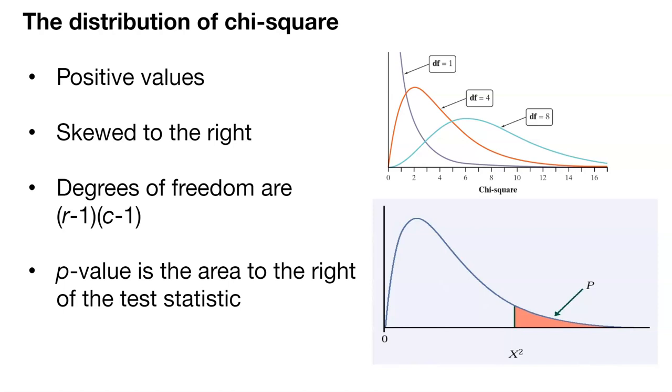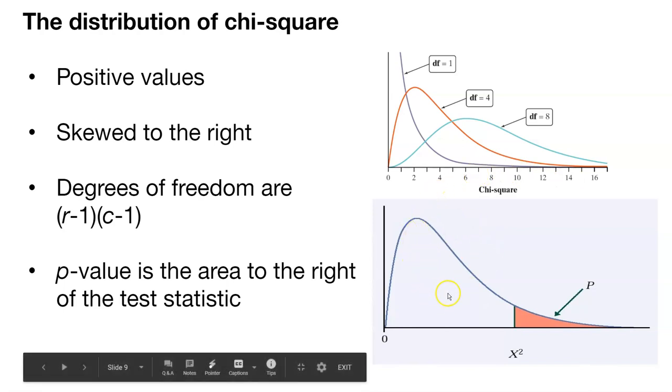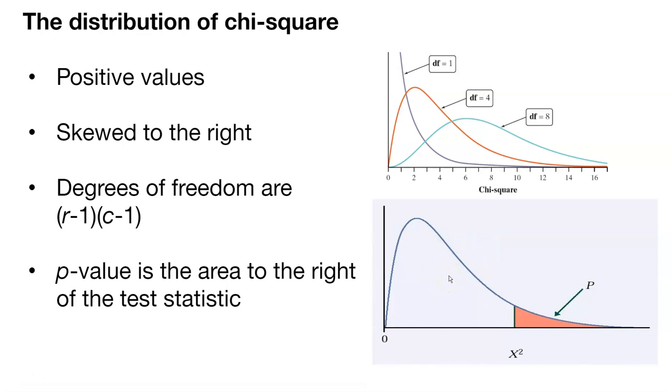If those observed and expected counts are very close, you'll have a small value of chi-square. And in that case, you would probably have evidence to favor the null hypothesis, or you would fail to reject the null hypothesis.